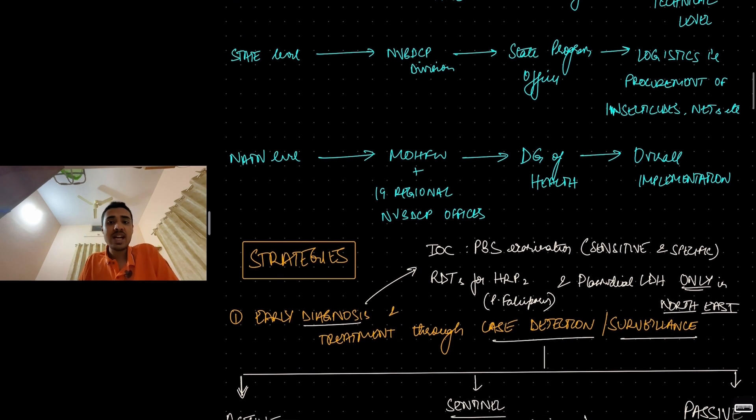Coming to the state level. In state level, you have NVBDCP division, National Vector Borne Disease Control Program Division Office. Here, you have the state program officer. State program officer is responsible for logistics, procures the insecticides, the insecticide-treated nets. All the anti-malarial equipment is procured. The storage facility, contracts, all that is handled by the state program officer.